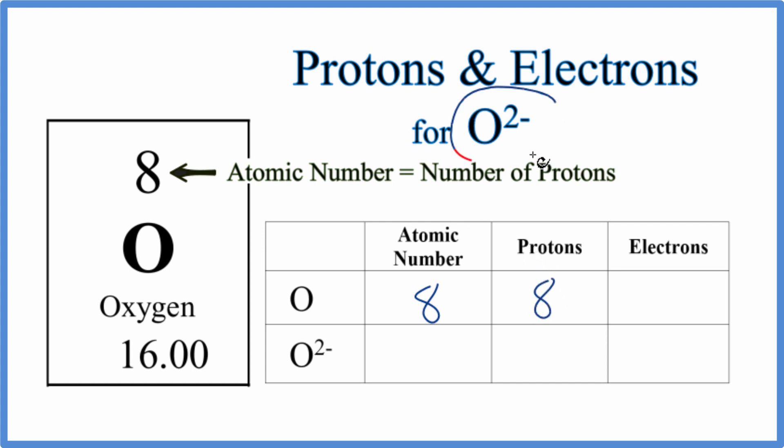When we're comparing ions and neutral elements, the only thing that's different is the number of electrons. So for O2 minus, the atomic number is also 8. That's because it's oxygen. Protons, 8. The only thing that will be different, the number of electrons.